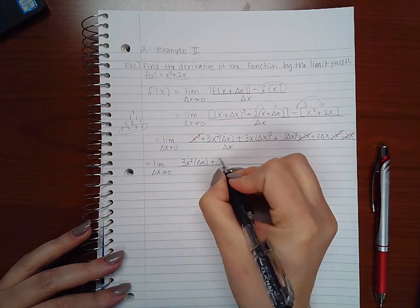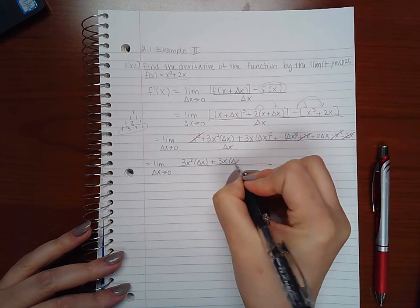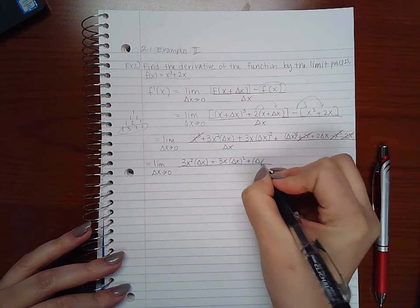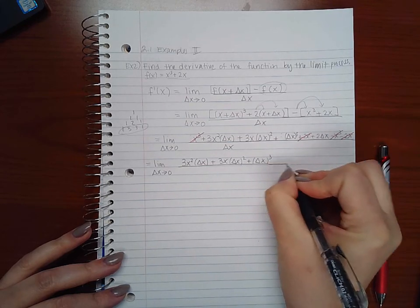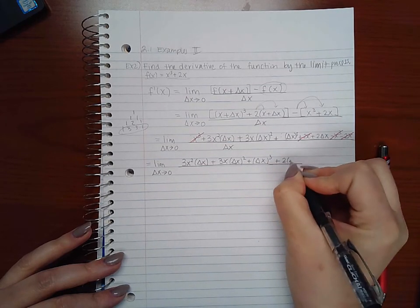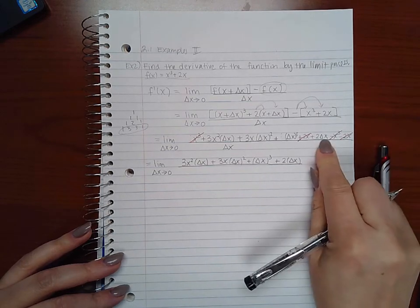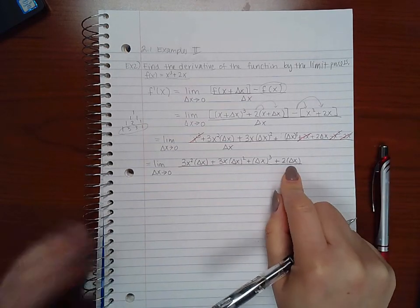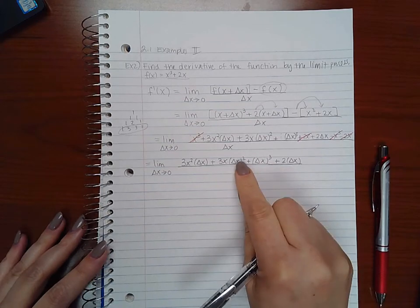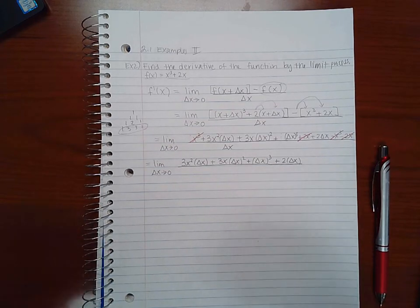So we end up with three x squared delta x plus three x delta x squared plus delta x cubed and then finally plus two delta x. Now you cannot put it in parentheses, or you can, it's up to you. It's only when it has a power that you need the parentheses there.